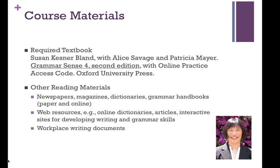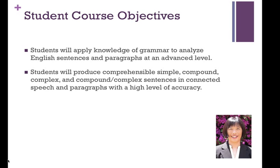For your course materials, the main one is the required textbook written by Susan Kessner-Bland with Alice Savage and Patricia Meyer. The book is called Grammar Sense 4, second edition, with online practice access code. This is available in the Mission College bookstore, published by Oxford University Press. Other reading materials include newspapers, magazines, dictionaries, grammar handbooks either paper or online, web resources such as online dictionaries, articles, interactive sites for developing writing and grammar skills, and workplace writing documents.